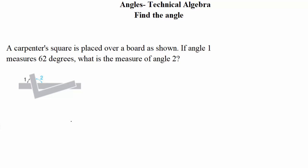This example is going to cover further examples with angles in different situations that we might come across, especially in the technical field. Here we have a carpenter's square placed over a board as shown. When we do that, these two angles are created — angle one and angle two. If angle one measures 62 degrees on the left side, what would be the measure of angle two?